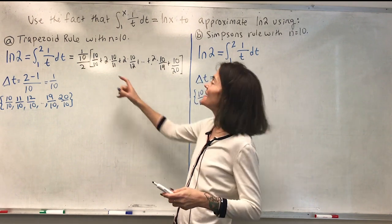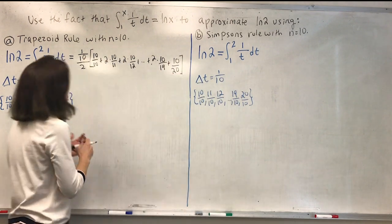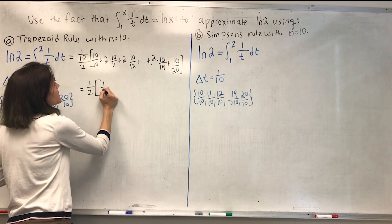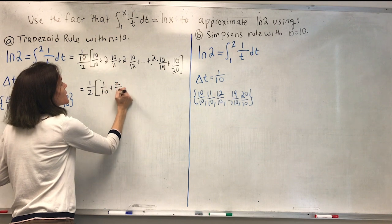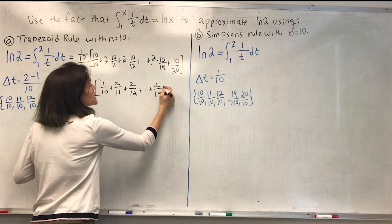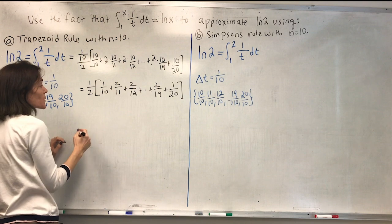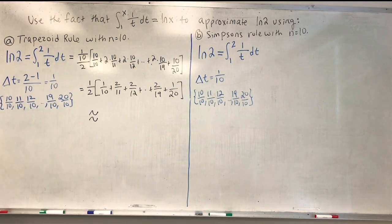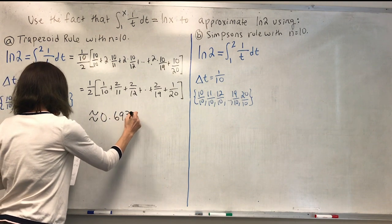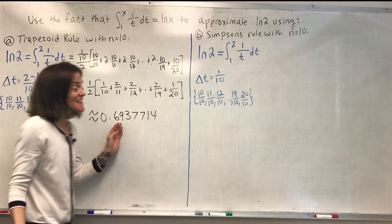The only reason I wrote it that way is because you see with this 1 tenth, I can do a slight simplification before I enter this into my calculator. So this is a half times 1 over 10 plus 2 over 11 plus 2 over 12, it goes out to 2 over 19 plus 1 over 20. So when we put this into our calculator, approximately 0.693771. This is what we get in our calculator. We can enter it all in one line for example.